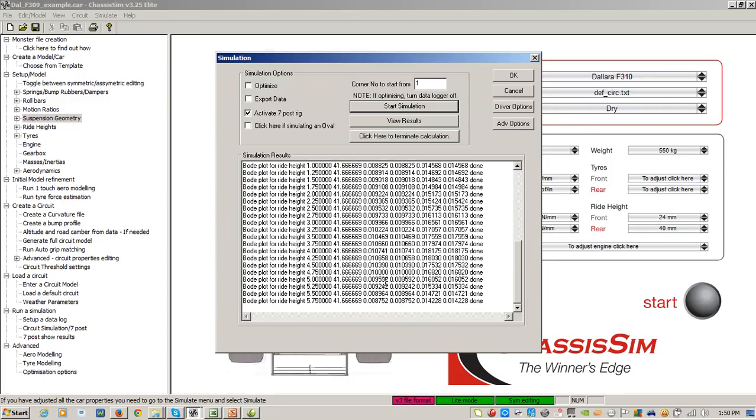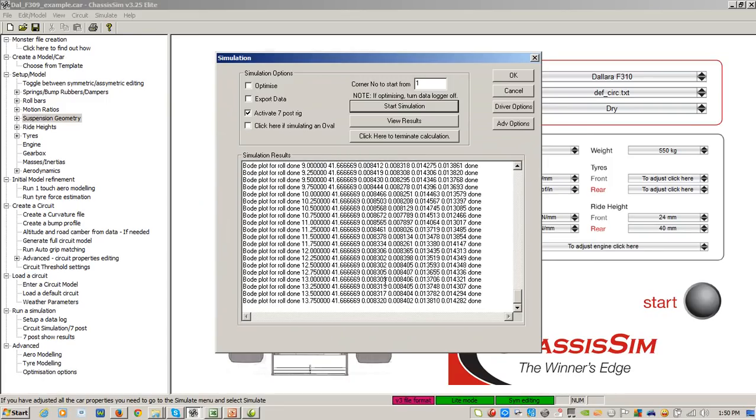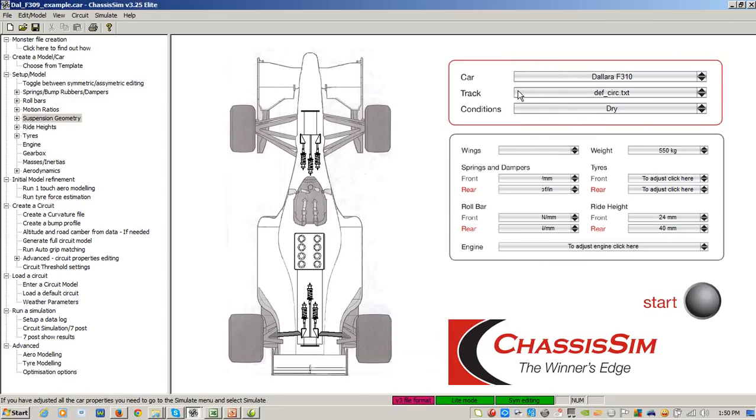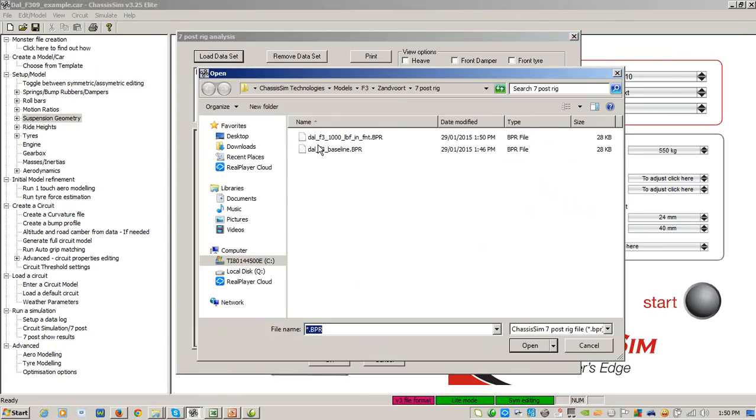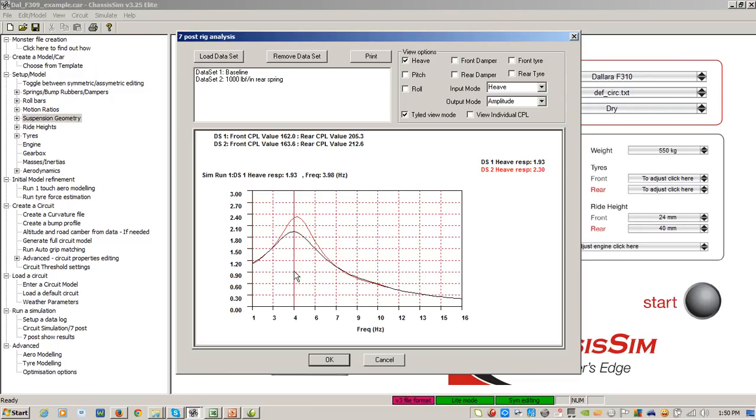And now that we've done, just to analyze those results, we go to Simulate, 7-Post Rig Analysis Results, go to Load Dataset. I'll load my baseline first, then I'll load my change. And now to compare the two, there you go. So the original, as you can see, was black. The data set, the 1,000-pound rear spring is the red response. So as you can see, it's a bit of a worse response, particularly in terms of our contact patch load variation at the rear. Now, again, a bit of a Mickey Mouse example of what to do. But you can then go through and apply all the changes and get a really good feel for what the car is doing.